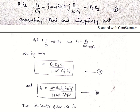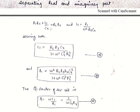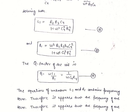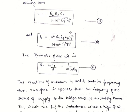Since both L1 and R1 are unknown quantities in these equations, we substitute one into the other. Solving both equations simultaneously, we get: L1 = R2·R3·C4 / (1 + ω²·C4²·R4²), and similarly R1 = ω²·R2·R3·R4·C4² / (1 + ω²·C4²·R4²).